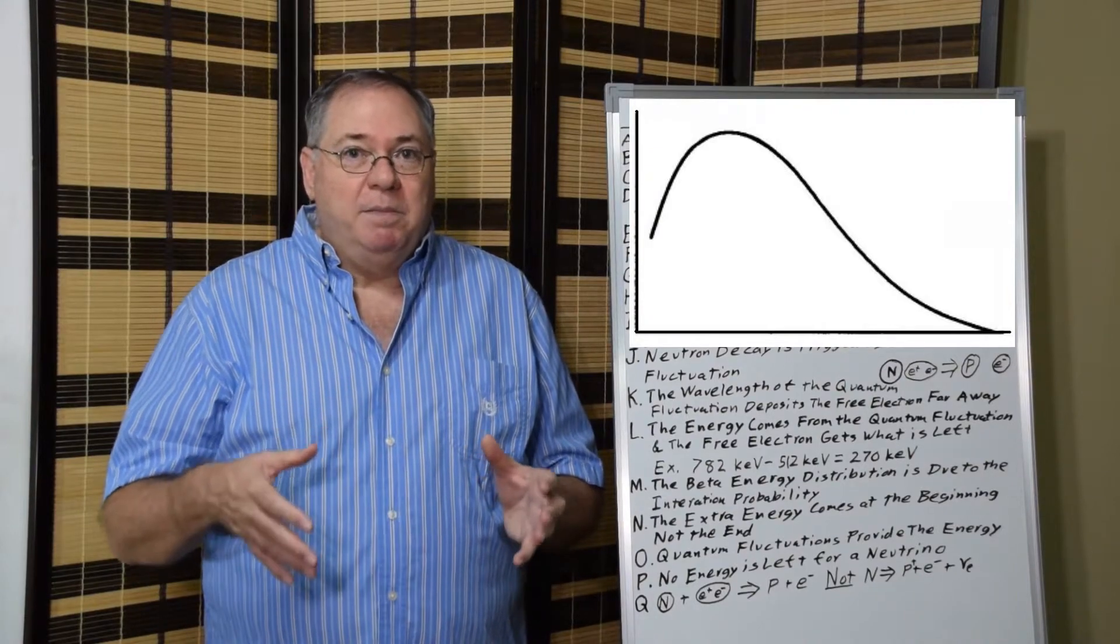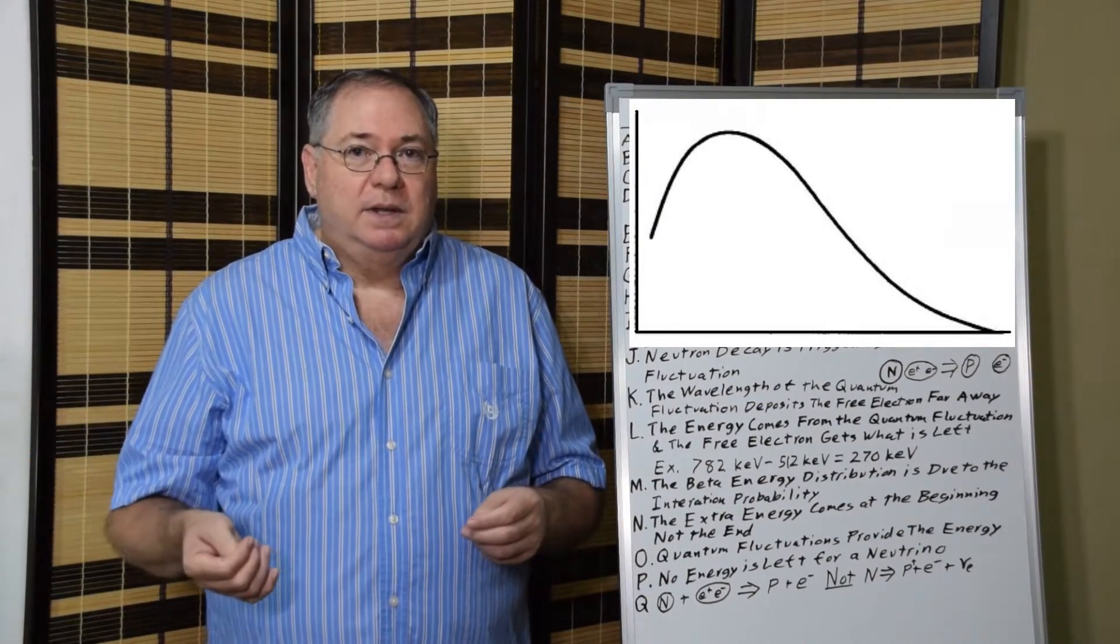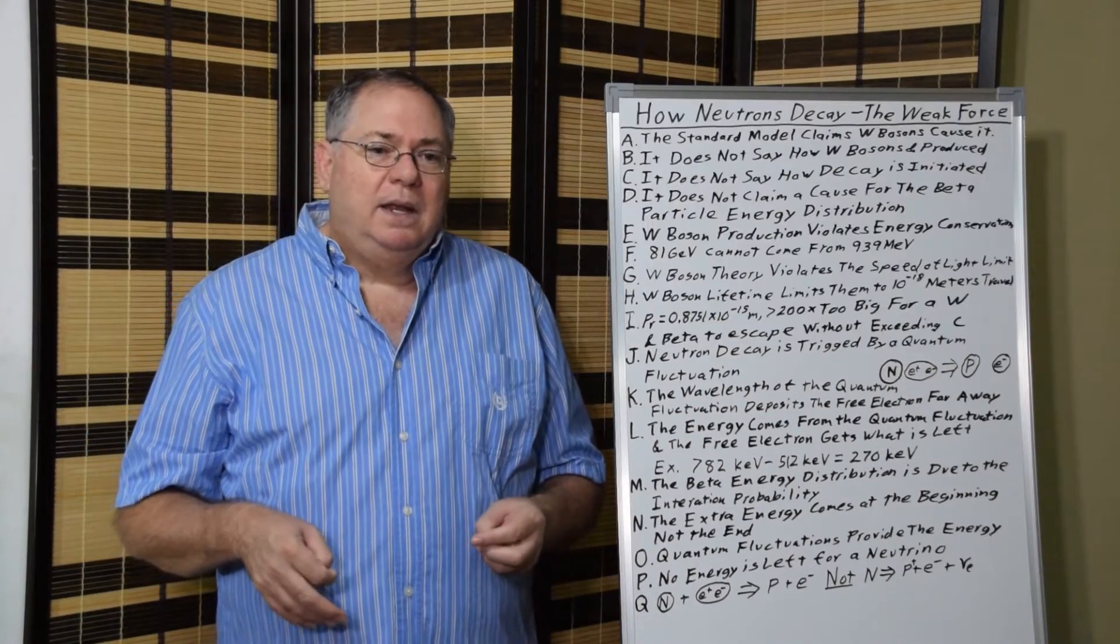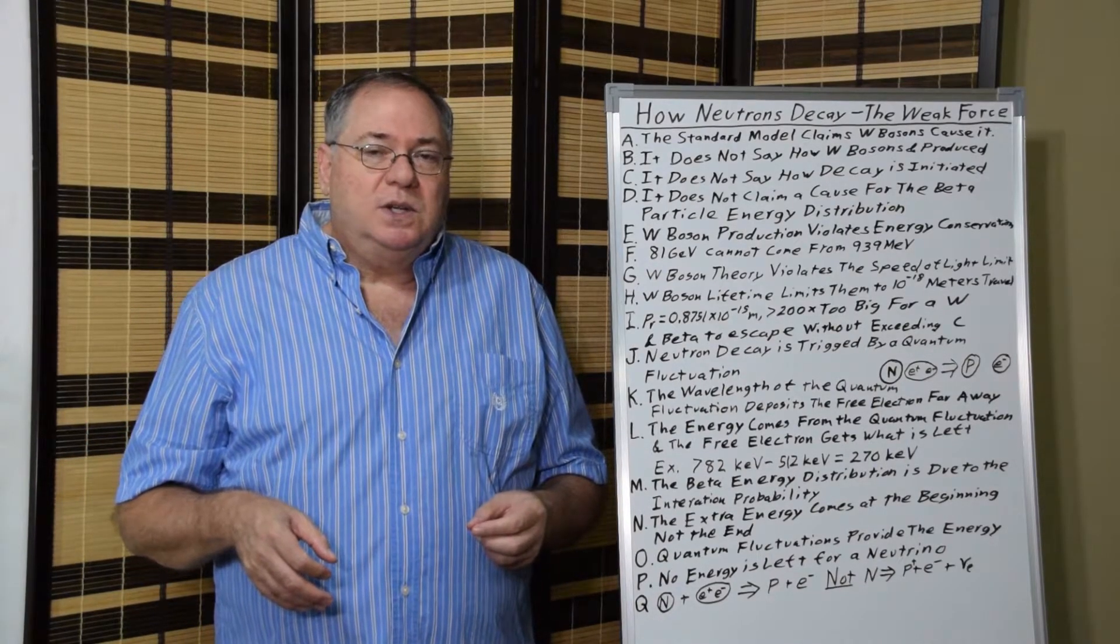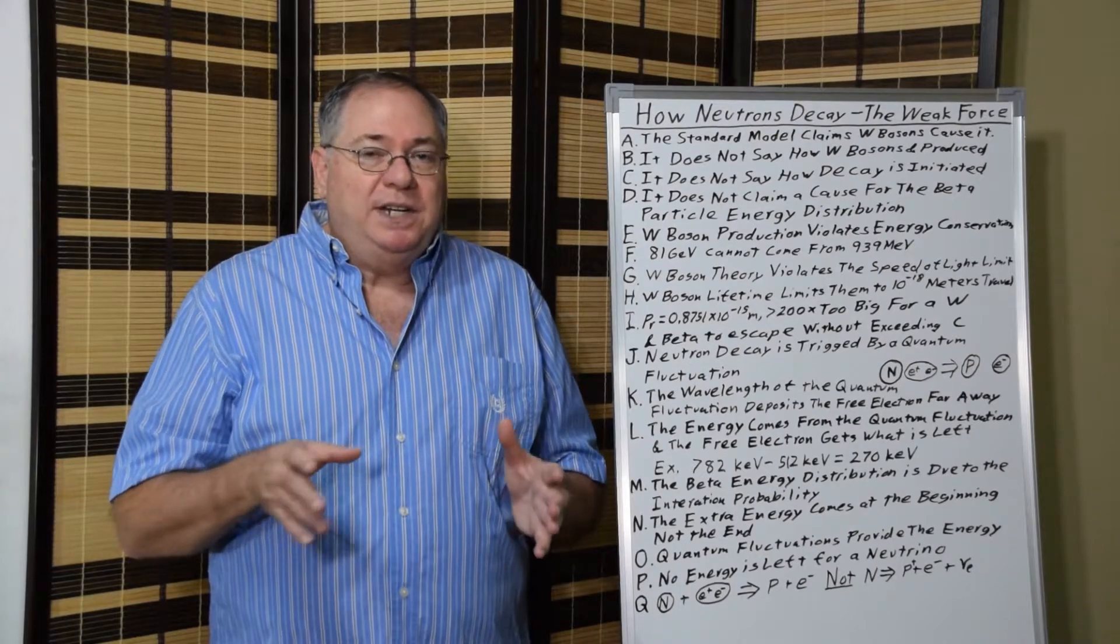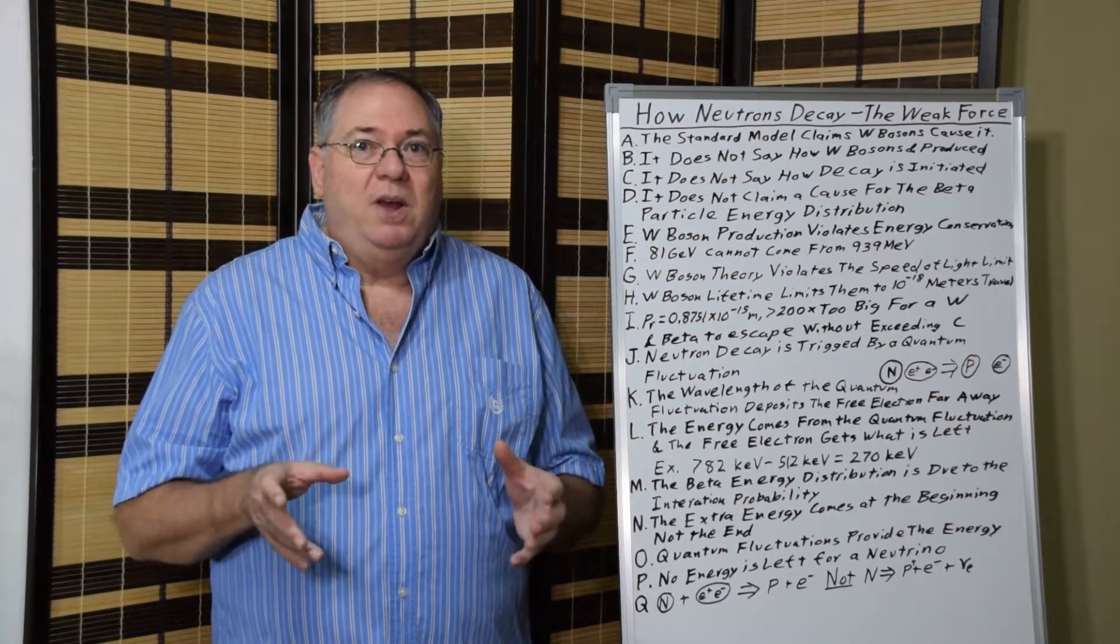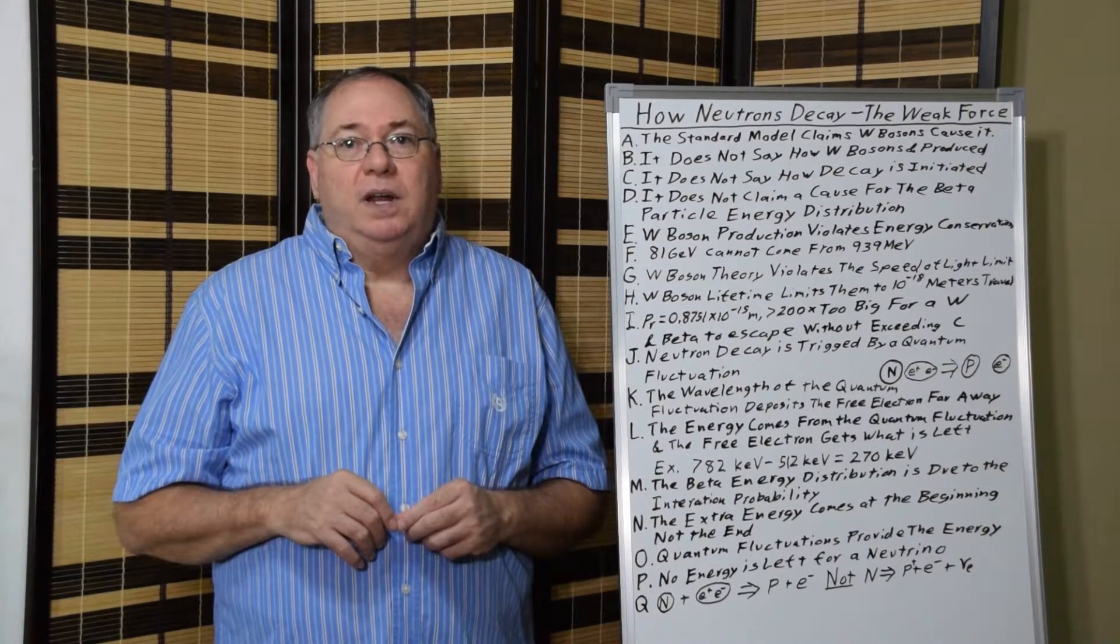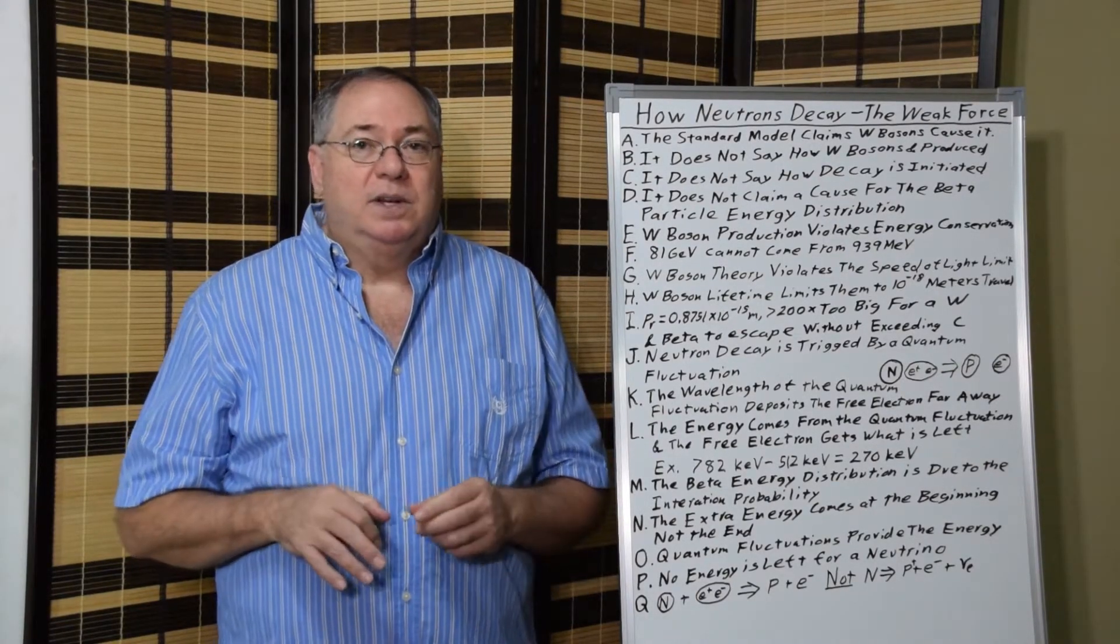Because black body spectrum is also due to interactions with quantum fluctuations. When you have a black body emissions in empty space in the so-called vacuum. So we get the energy distribution because of the probabilistic interaction between the neutron and the field of quantum fluctuations.